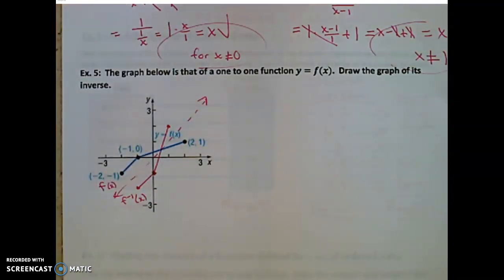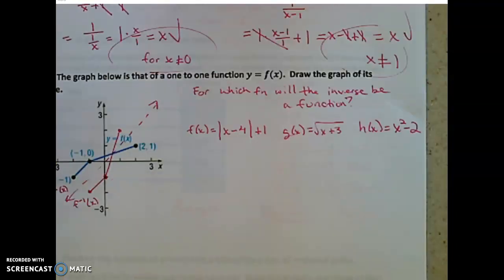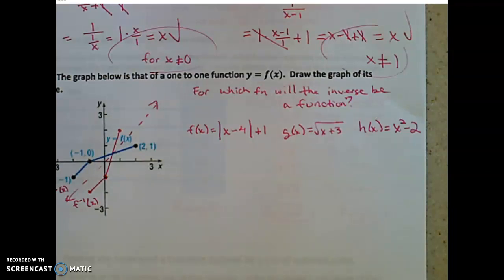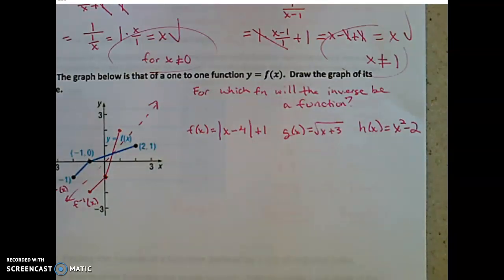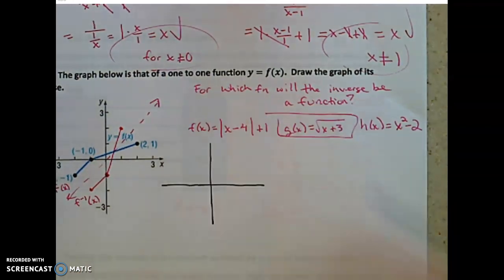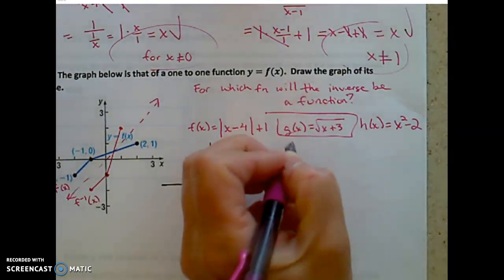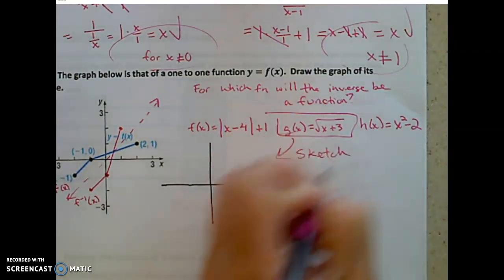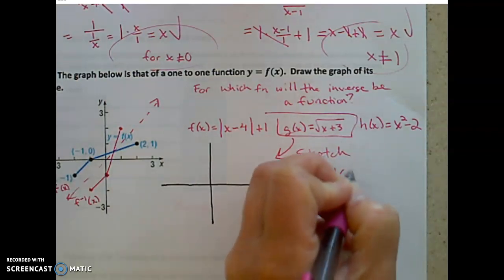If that was too easy, here's one last question. Here are three functions — f of x, g of x, and h of x. For which one will the inverse also be a function? The function needs to pass the vertical line test and the horizontal line test so that its inverse will be a function. G of x is the only one of these three that passes both the vertical line test and the horizontal line test. We're going to sketch g of x and sketch g inverse of x.